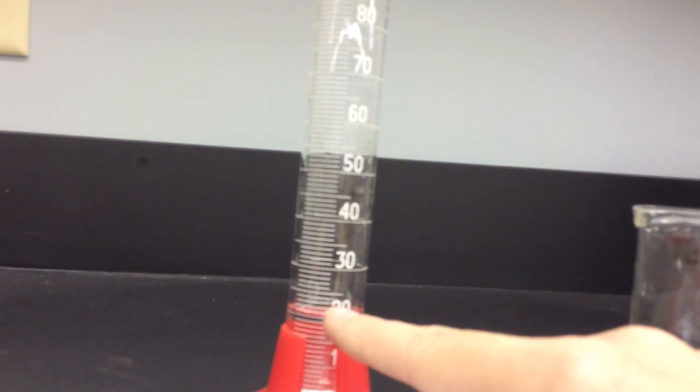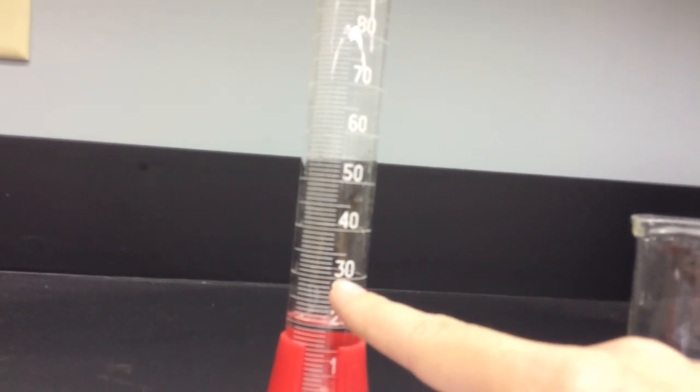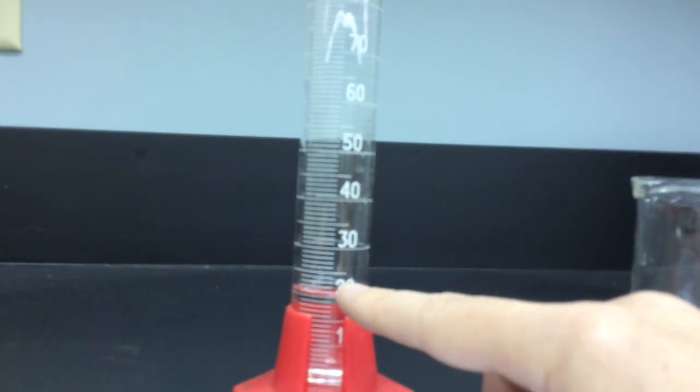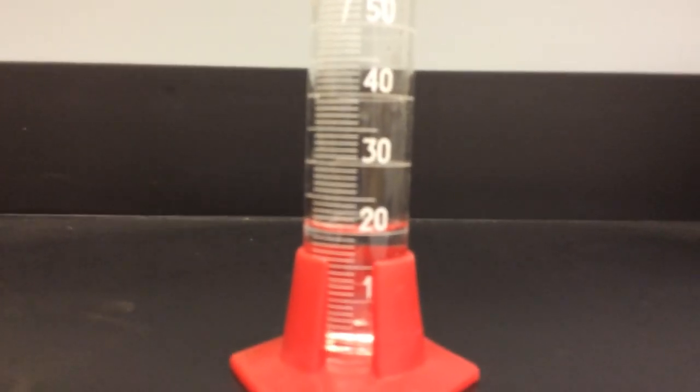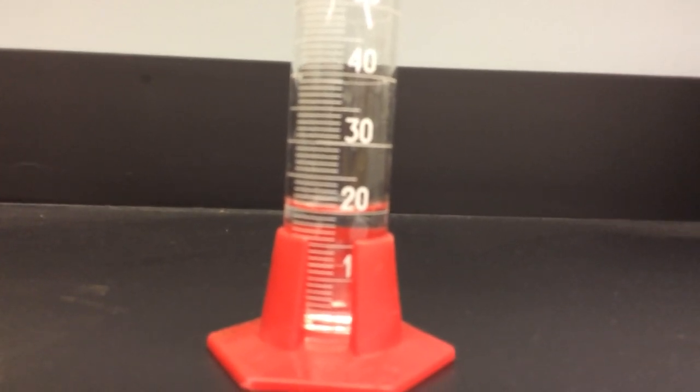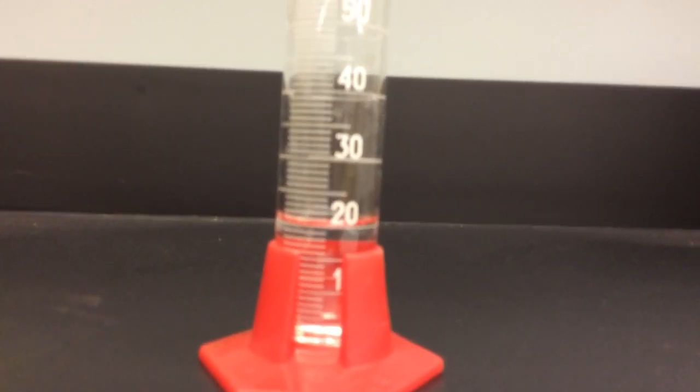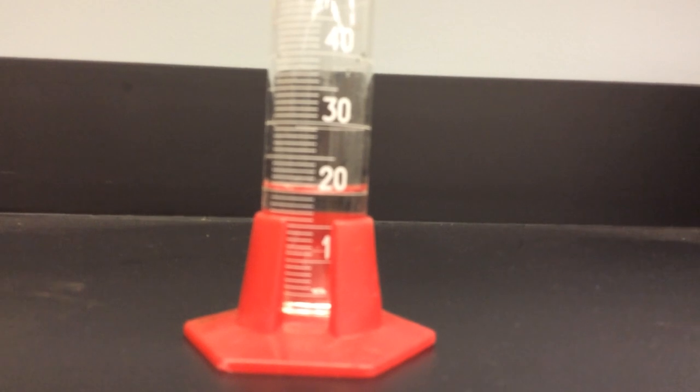So that's 20, 21, 22, 23, 24, 25, up to 30. This is units of 1's, whereas my burette was 0.1's. So that's why the burette is so much taller than the graduated cylinder. So this is in 1's as opposed to 0.1. So if I've got the meniscus right on 20.